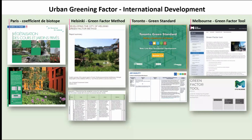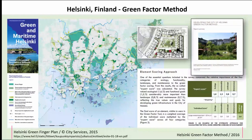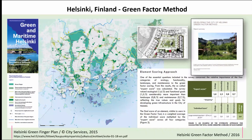You've got a coefficient of biotope from Paris, not dissimilar to the Berlin model, through to Helsinki, Toronto, and Melbourne. The Helsinki–Finland green factor method was particularly focused on the functionality of green infrastructure — a more sophisticated model looking at ecological structure, functionality, aesthetic, and maintenance factors, assessed through an expert score and individual site scores. It was trying to reinforce those green urban fingers reaching into the heart of the city, ensuring investment in green infrastructure targeted to strengthen those green wedges for enhanced ecosystem services and climate change management.